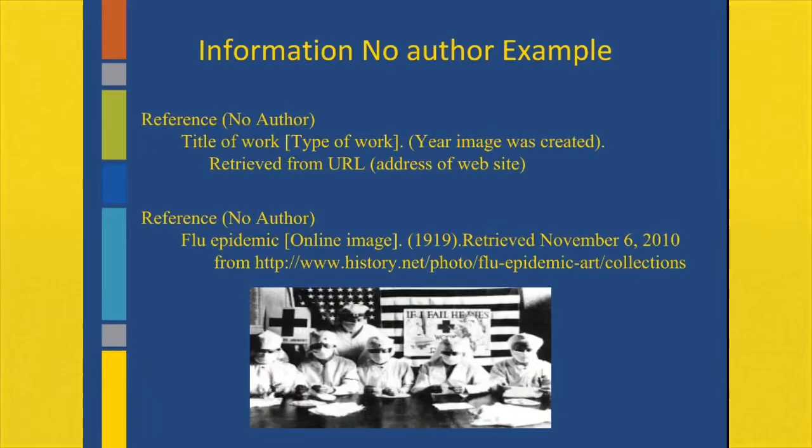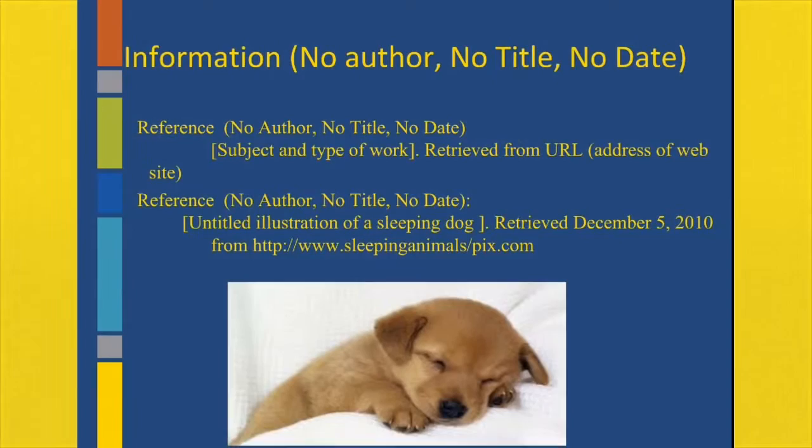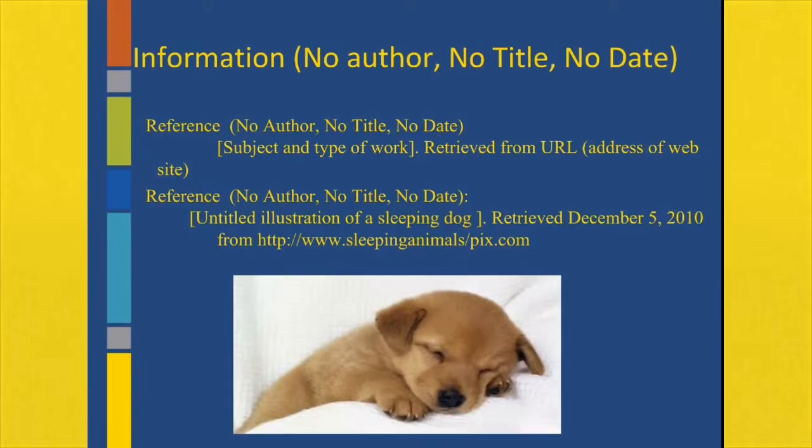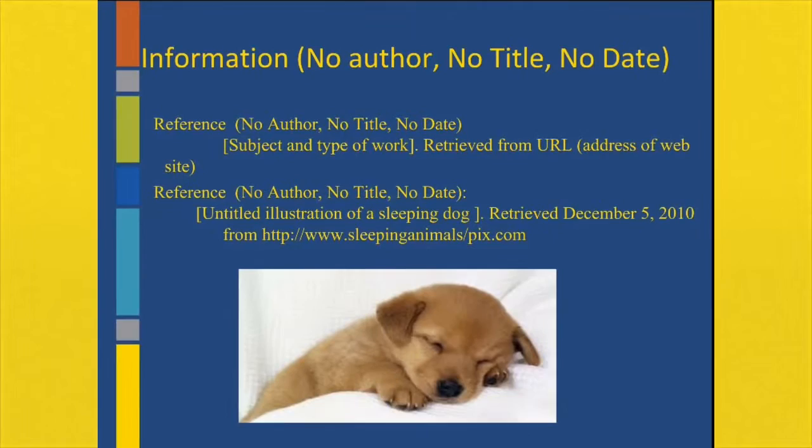Now we have an image with no author, no title, and no date. In this case, you're going to list 'untitled illustration of a sleeping dog,' when it was retrieved, the date it was retrieved, and the URL.